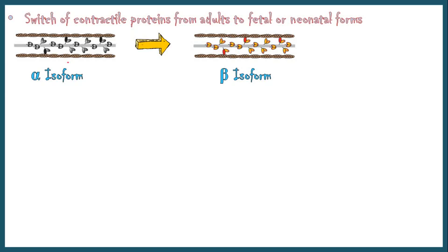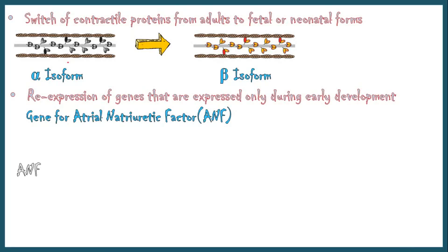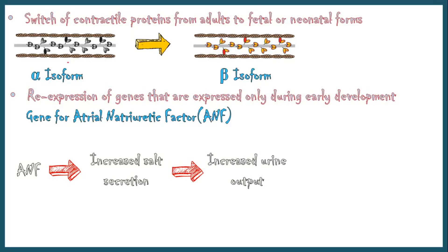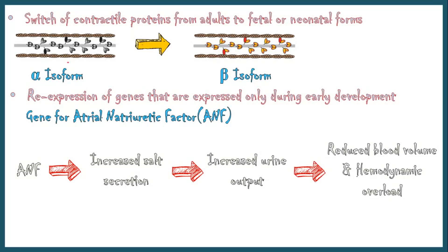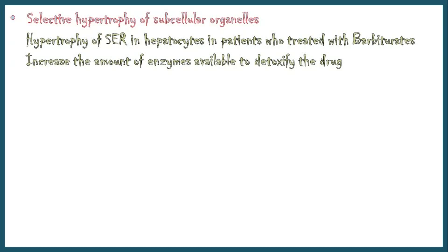In addition, some genes that are expressed only during early development are re-expressed in hypertrophic cells, for example the gene for atrial natriuretic factor. It is a peptide hormone that increases salt secretion from the kidney, increases urine output, and helps to reduce blood volume and hemodynamic overload. Sometimes a subcellular organelle may undergo selective hypertrophy; individuals treated with drugs like barbiturates show hypertrophy of the smooth endoplasmic reticulum in hepatocytes, an adaptive response that increases the amount of enzymes available to detoxify the drug.